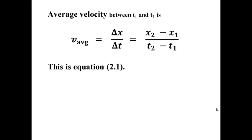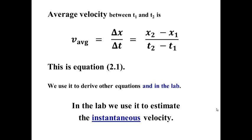Average velocity is a very specific thing. It is defined to be delta x — displacement — divided by the time over which you made that displacement. So x2 is the position at time t2, and x1 is the position at time t1. This is equation 2.1, and we use it for many other things in class, but it's also a fairly basic definition that we use in the lab to estimate instantaneous velocity.